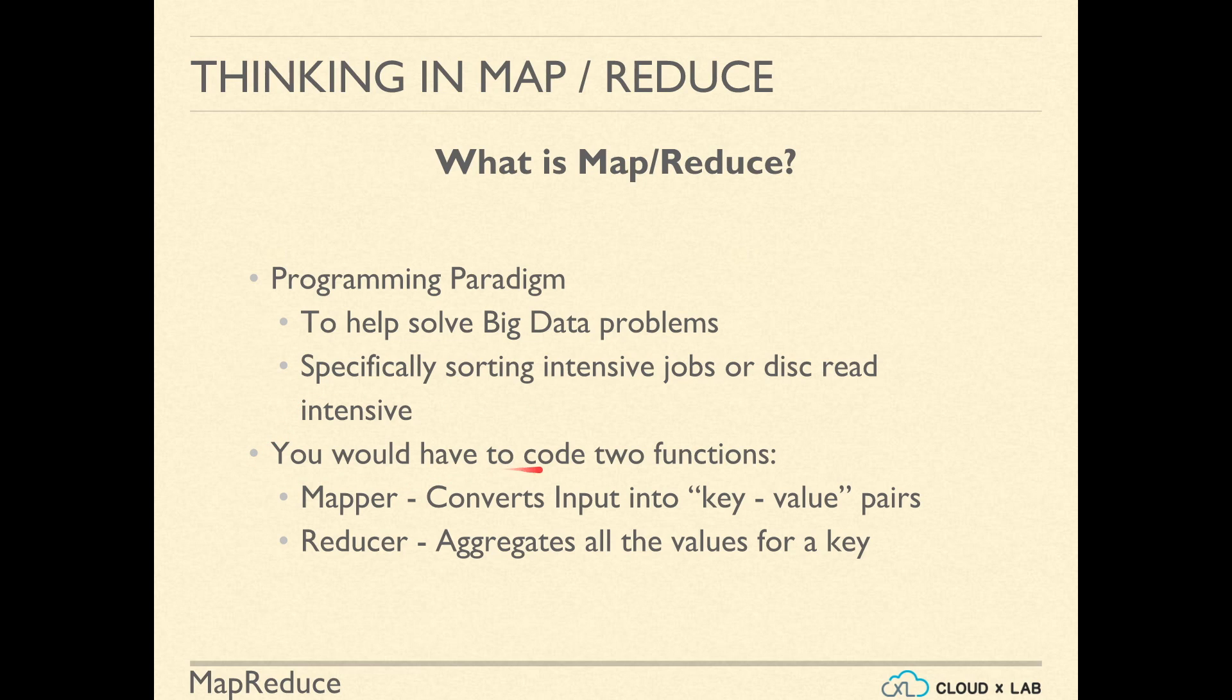Ideally, you would write two functions or pieces of logic, mapper and reducer. The mapper converts every record from the input into key-value pairs. Reducer aggregates values for each key as defined by mapper or the map phase.